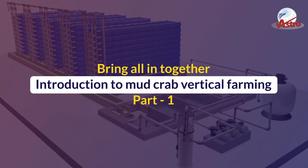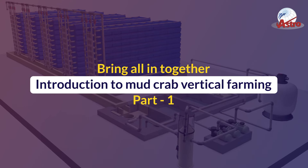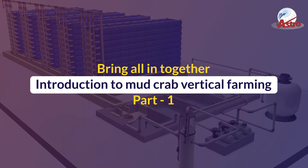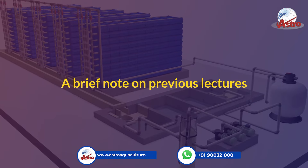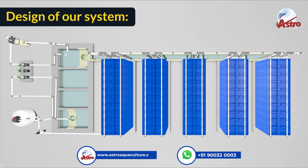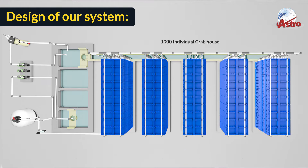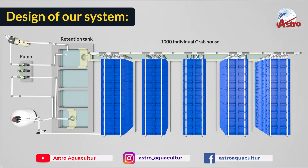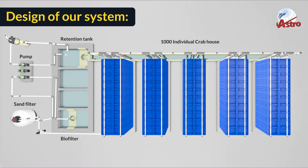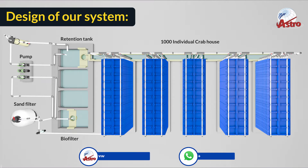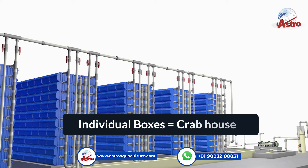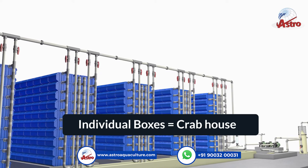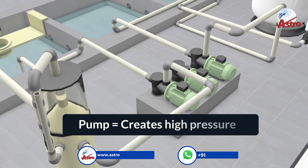Mud Crab Vertical Families, Part 1: a brief note on previous lectures and the design of our system. We are growing 1000 individual crabs in individual boxes called crab houses. The waste from these boxes is managed through a recirculating water treatment system.